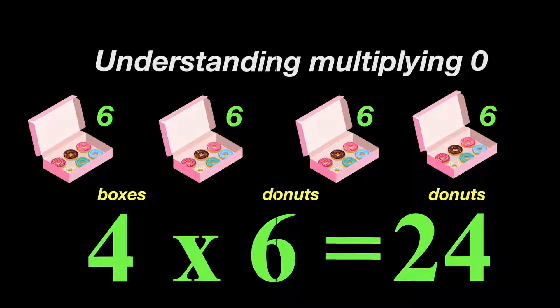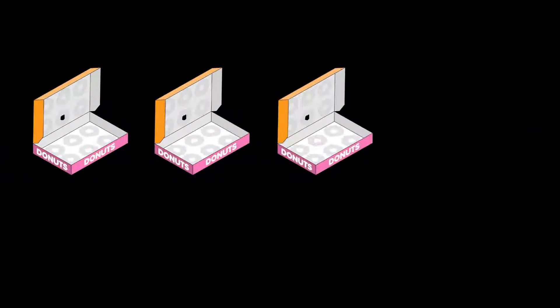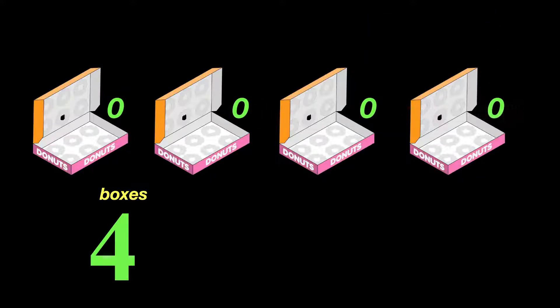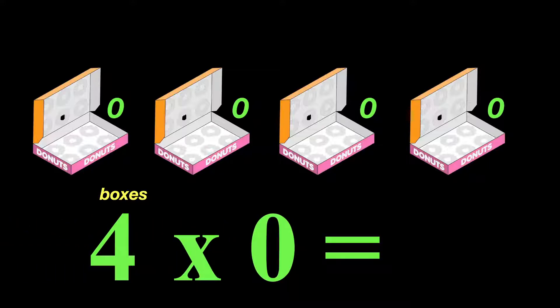Imagine this time that you have four boxes, but if it's like my house, it's probably not going to be any donuts. It's going to be zero donuts. So we do have four boxes though, but we've got zero donuts in each box. So this would be four boxes times zero donuts.